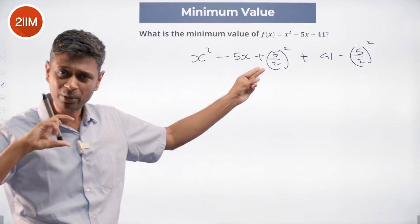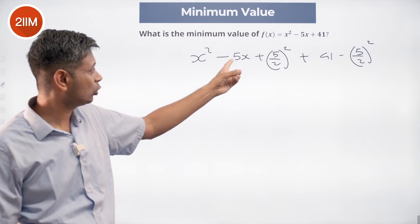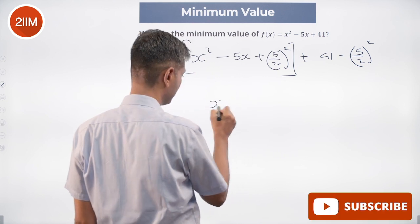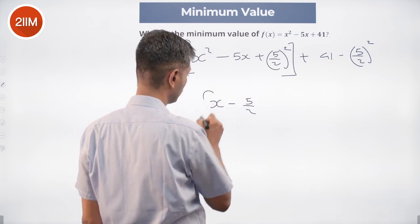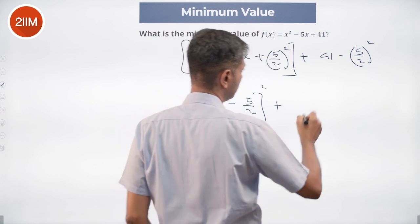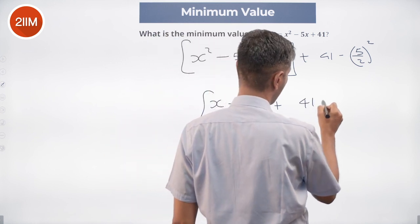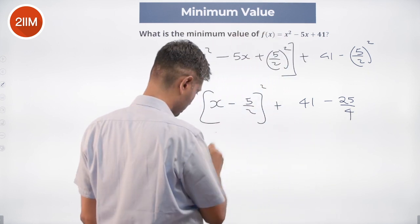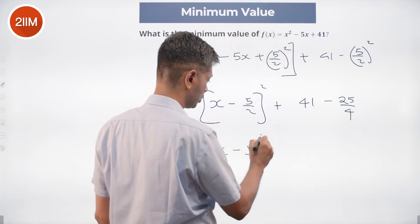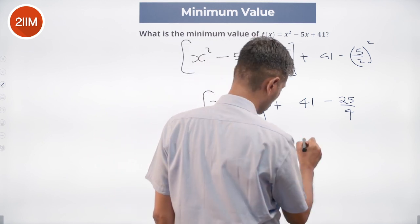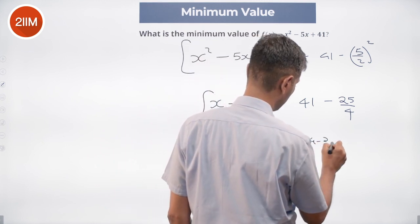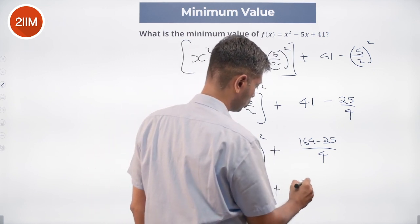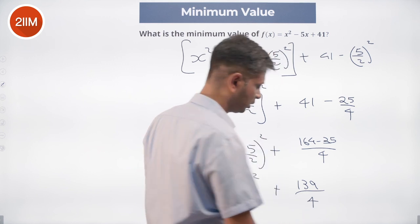If a were minus 5/2, then 2 times minus 5/2 gives minus 5, so this part simplifies as (x minus 5/2) whole squared plus 41 minus 25/4. This gives (x minus 5/2) whole squared plus (164 minus 25)/4, which is (x minus 5/2) whole squared plus 139/4.